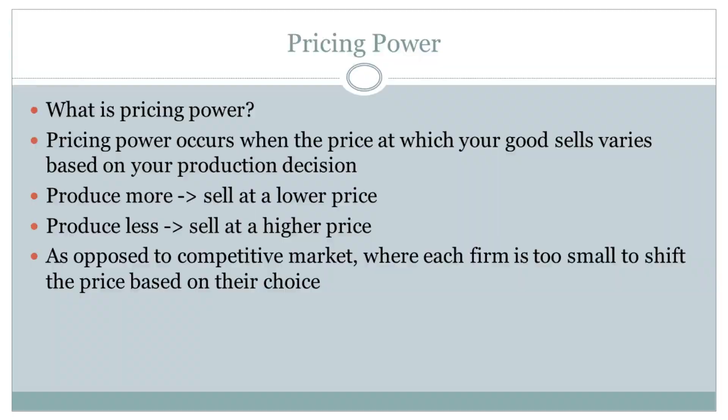As I've said a number of times throughout the course, many, many markets — especially markets today — are not particularly competitive, or at least there's some sort of limitation on the competition they face. When that happens, we get what's called pricing power. Pricing power is simply the ability to set your own price. Instead of the market setting the price, you have the ability to choose: do I want to produce a whole lot of units at a very low price, or very few units at a very high price? That's a pricing decision you have control over when competition against you is limited.